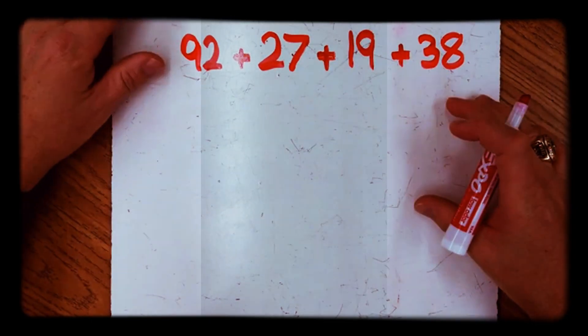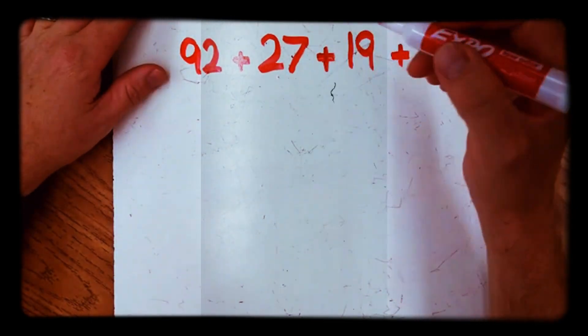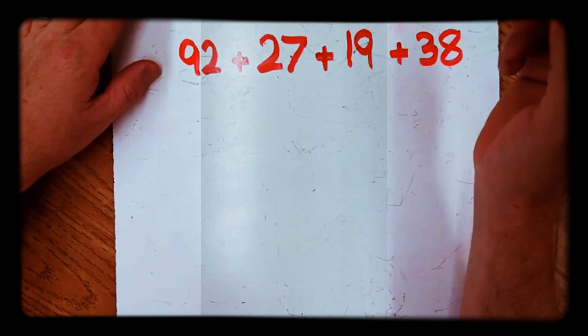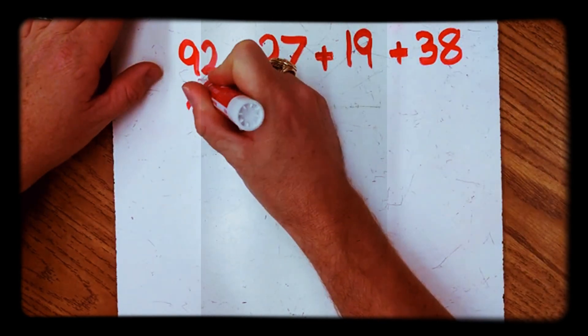All right guys, we're going to go ahead and add four two-digit numbers. It's going to go kind of quick, but you can always rewind and play as many times as you want.